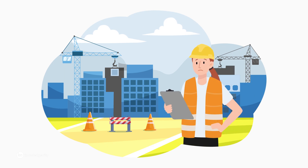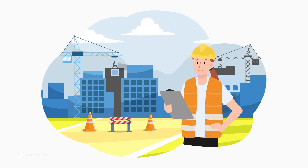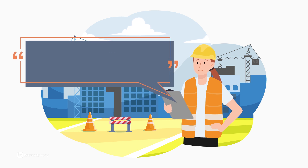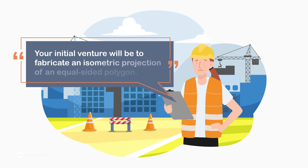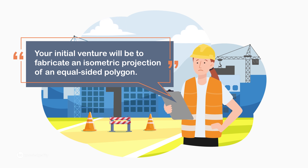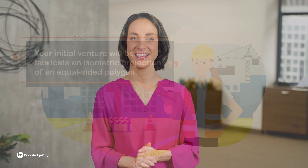Here's a quick example. Pretend you're a federal contractor working on a landscape project, and you receive this instruction from an agency: 'Your initial venture will be to fabricate an isometric projection of an equal-sided polygon.' Even if you know all the relevant jargon, this might be confusing. What are these terms? How are you supposed to be fabricating this projection?